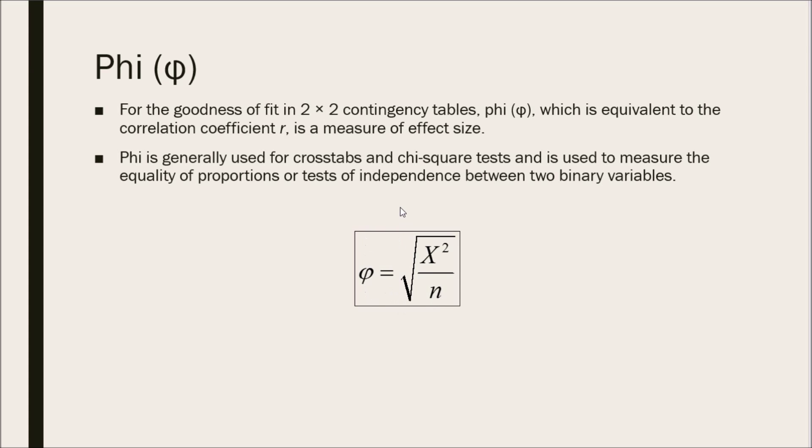It's simply the square root of the chi-square result divided by the total sample size and that gives you the Phi effect size.